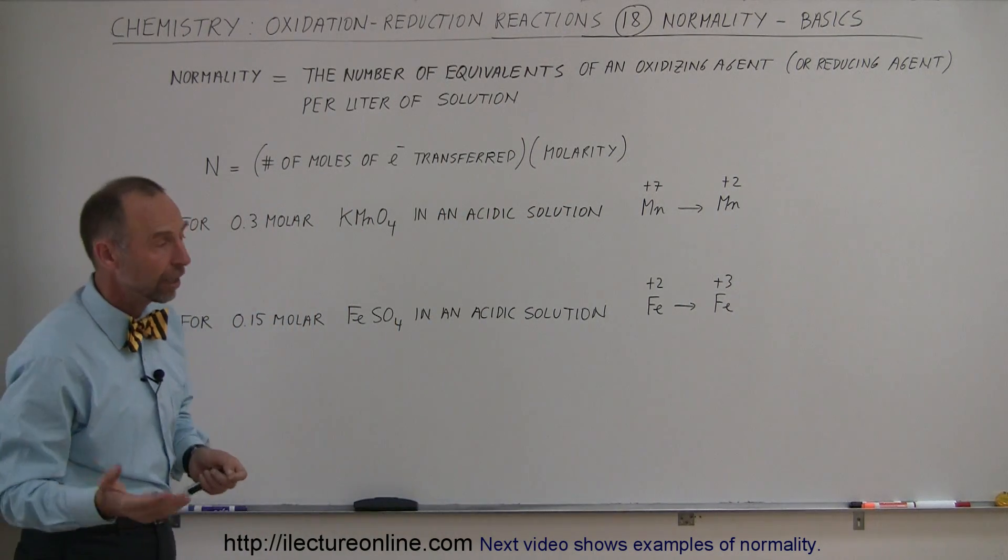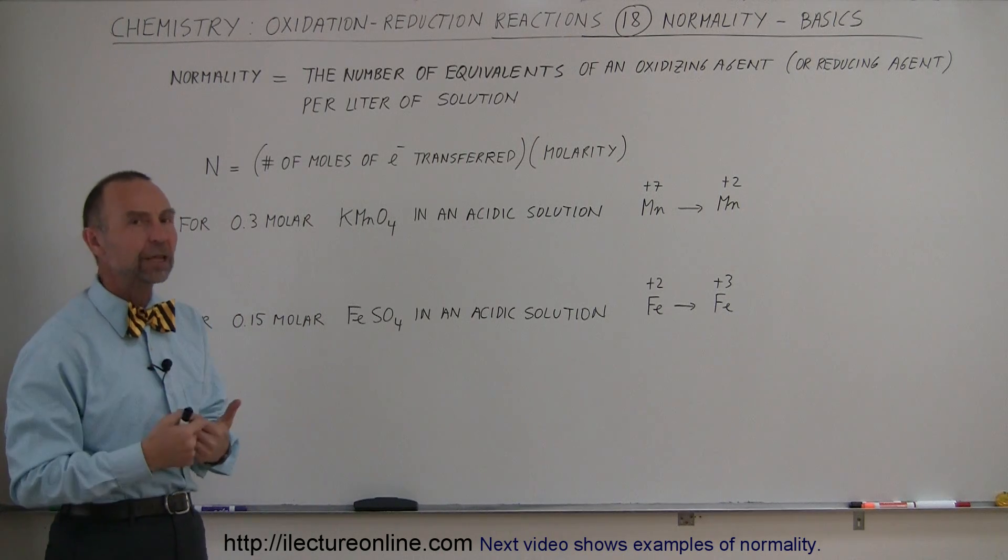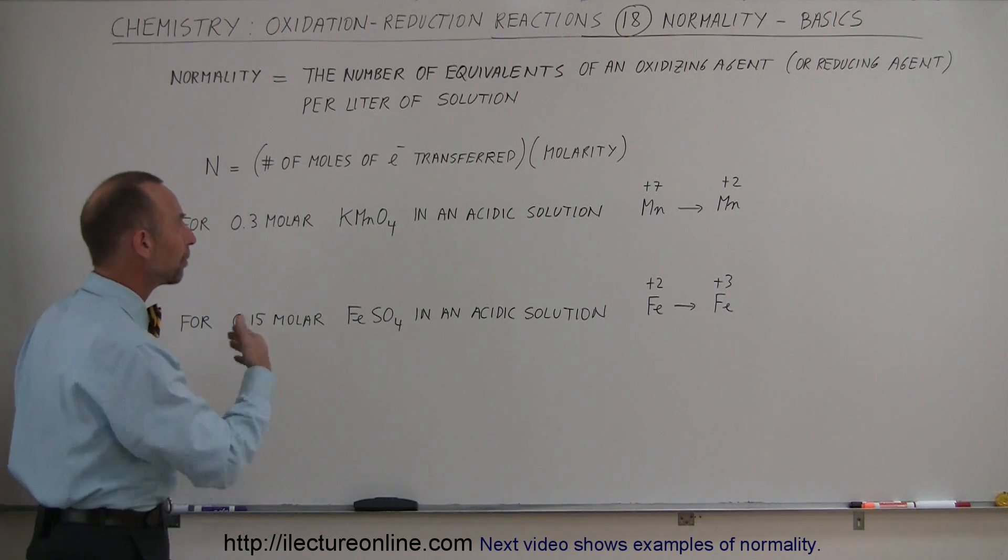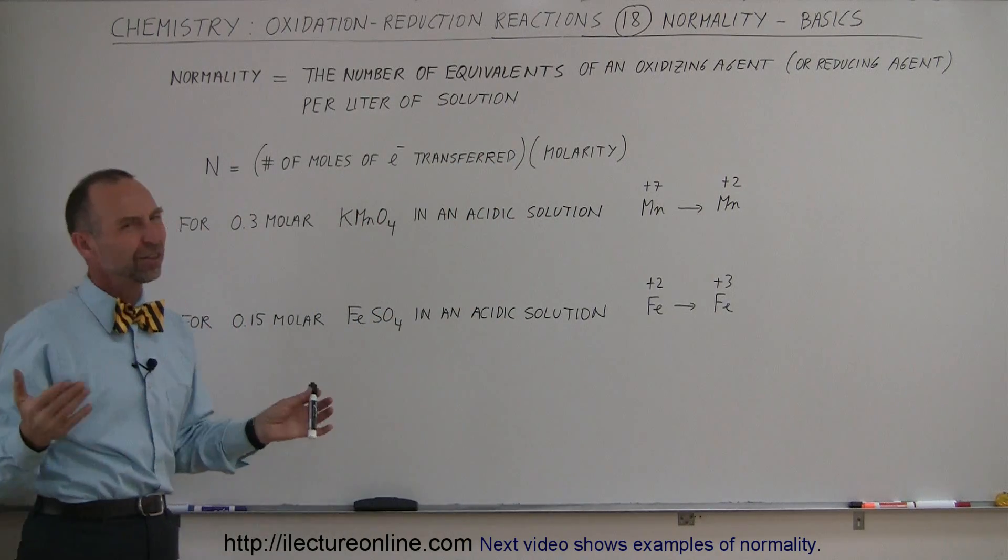Of course, if you have twice as many moles and each mole has a certain number of moles of electrons being transferred, that plays a part as well. So it's simply a product of the molarity times the number of moles of electrons transferred. That's pretty straightforward.